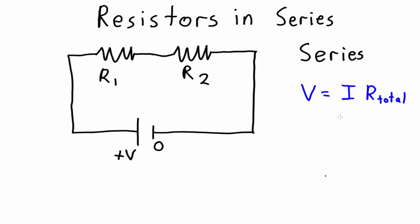So let's start out using the loop rule. So remember the loop rule tells me that the total voltage drop across this circuit here must be equal to the voltage gain across the battery. So that means that the voltage gain is equal to V. The total voltage drop is going to be equal to the voltage drop across resistor 1 plus the voltage drop across resistor 2.